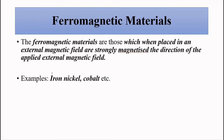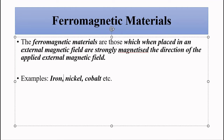Ferromagnetic materials are those which, when placed in an external magnetic field, are strongly magnetized in the direction of the applied external field. If you recall the definition of paramagnetic materials, they are those which when placed in an external field are weakly magnetized in the direction of the applied field. So the only difference between the two definitions is the words 'weakly' and 'strongly' — weakly in the case of paramagnetic, strongly in the case of ferromagnetic. That's why ferromagnetic is the magnified version of paramagnetic. Examples include iron, nickel, and cobalt.